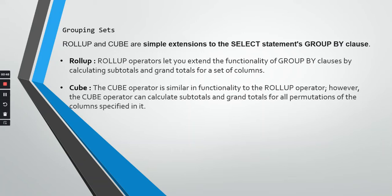So if you have a GROUP BY clause for several columns, rollup can further create the sum totals and grand totals for each and every grouping column and then a grand total. Similarly, the cube operator is similar in functionality to the rollup operator. However, the cube operator can calculate subtotals and grand totals for all permutations of columns specified in it.